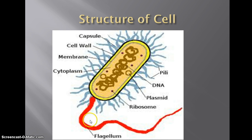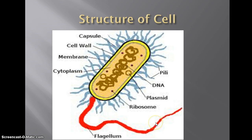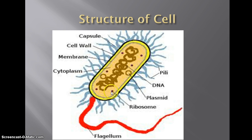The flagellum, or flagella, is for movement — motility — and it allows the cell to move. Some cells can have one, some can have many. I'll show you a picture of the flagellum in action pretty soon. Ribosomes we talked about as being little factories, and we know factories make things. So ribosomes are protein factories, which means they produce proteins.